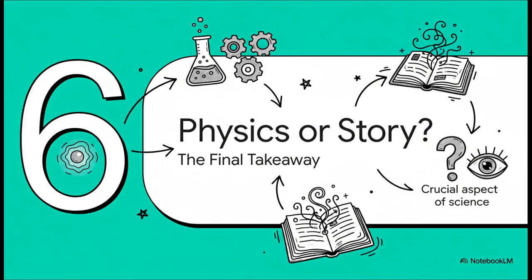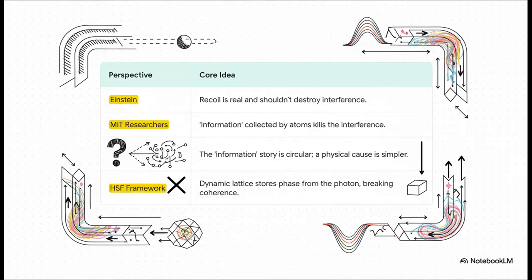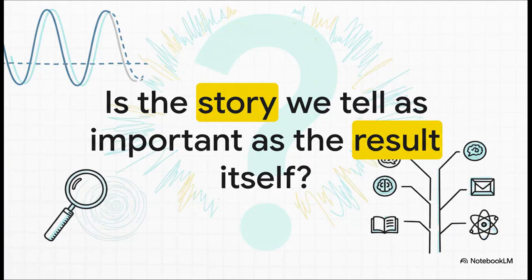So, where does all this leave us? What's the big takeaway here? Well, we have one experiment, one physical result, but three very different stories to explain it. And that really highlights something crucial about how science works. Let's just put them all on the table side by side. You had Einstein, who focused on the reality of that physical recoil. You have the MIT researchers, who brought in the abstract concept of information. Then you have Sabine Hossenfelder, who pointed out the logical flaw and argued for a simpler physical cause. And finally, the HSF framework comes in and offers a detailed physical mechanism, phase storage and wave channels, that seems to beautifully unify the valid points from everyone else.